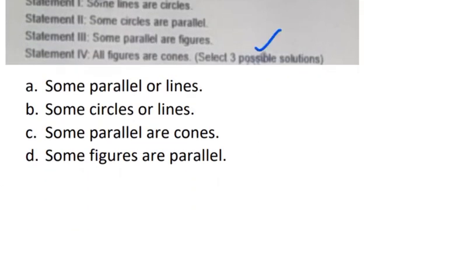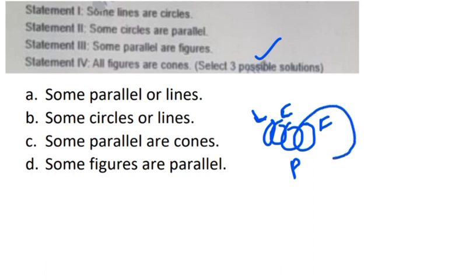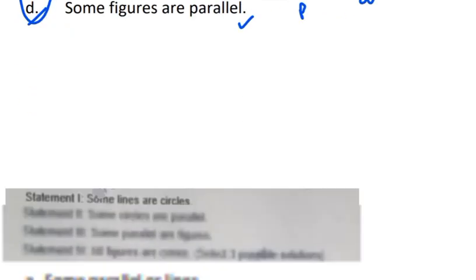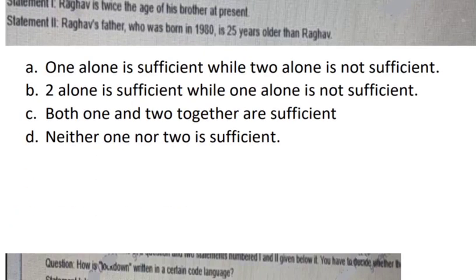The next question is also the same type - you have to choose three possible solutions. The statements are: some lines are circles, some circles are parallel, some parallels are figures, and all figures are cones. Again checking each option: 'some parallels are lines' is not true. 'Some circles are lines' is definitely true. This is actually a repeated question, so B, C, D is again the correct answer.